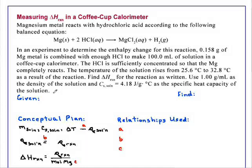Find delta H reaction for the reaction as written. Use 1.00 g per mL as the density of the solution and 4.18 J/g°C as the specific heat capacity of the solution.